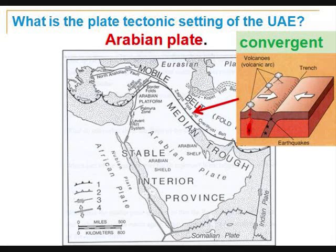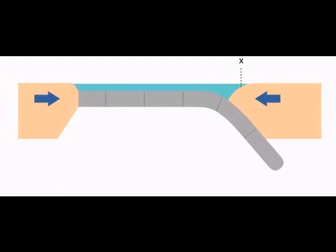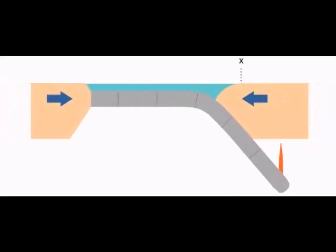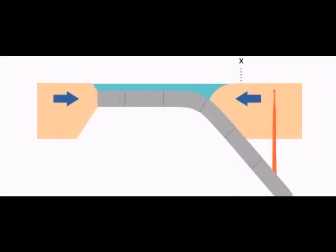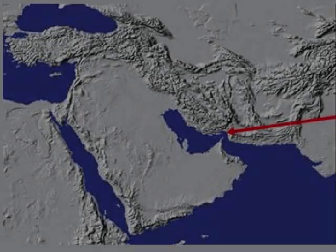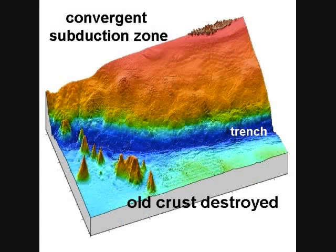Where the Arabian plate is moving into the Eurasian plate, we have convergent movement. As the Arabian plate moves into and under the Eurasian plate, the plate is slowly moving under Iran, producing the Zagros Mountains, which are being built as the Eurasian plate is lifted. The Arabian plate slips under the Asian plate, and all crust will be destroyed, creating a trench.